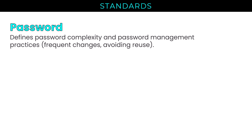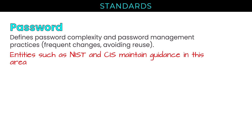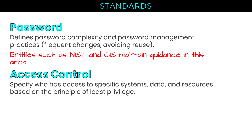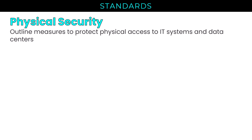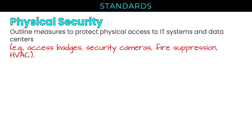Guidance on password complexity and password management comes from a number of sources — some vendor-specific but authoritative sources like NIST and the Center for Information Security. Access control standards specify who has access to specific systems, data, and resources based on the principle of least privilege. ISO 27001 offers guidance on information system management that can help here. Standards around physical security protect physical access to systems and data — this could include access badges, security cameras, fire suppression, HVAC, and security guards.